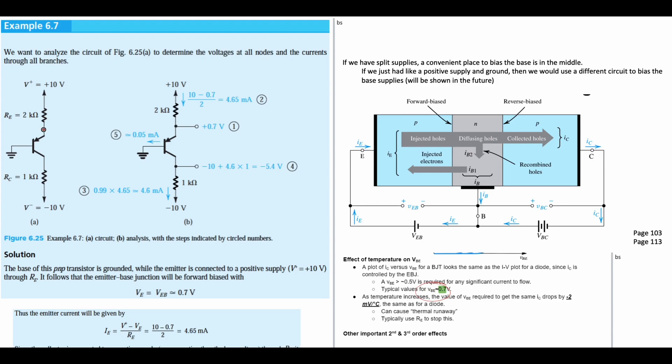So VBE is equal to VE, which is equal to about 0.7 volts. So that so far matches. Now let's keep going.